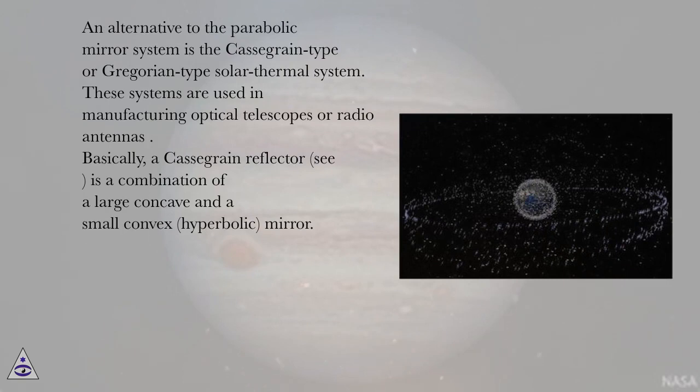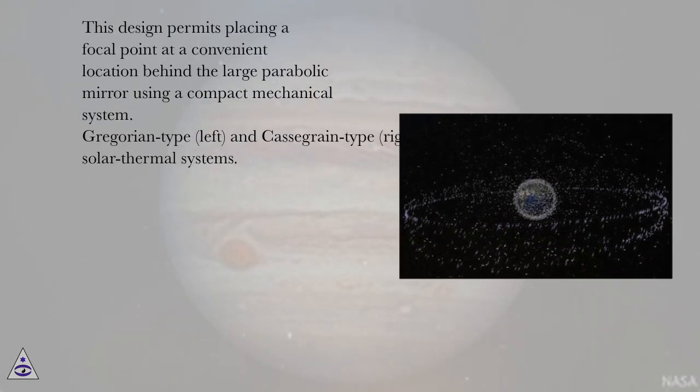An alternative to the parabolic mirror system is the Cassegrain-type or Gregorian-type solar thermal system. These systems are used in manufacturing optical telescopes or radio antennas. Basically, a Cassegrain reflector is a combination of a large concave and a small convex hyperbolic mirror. This design permits placing a focal point at a convenient location behind the large parabolic mirror using a compact mechanical system.